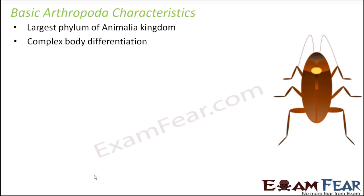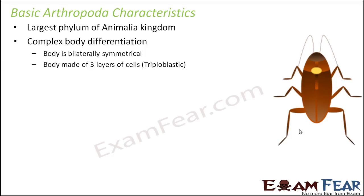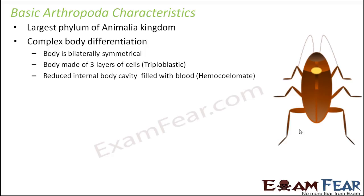Arthropods have complex body differentiation with specific organs and organ systems. The body is bilaterally symmetrical — if you divide the body from the middle you get two laterally similar halves. They are made up of three layers of cells, i.e., triploblastic. They have a reduced internal body cavity filled with blood, so they are haemocoelomte.